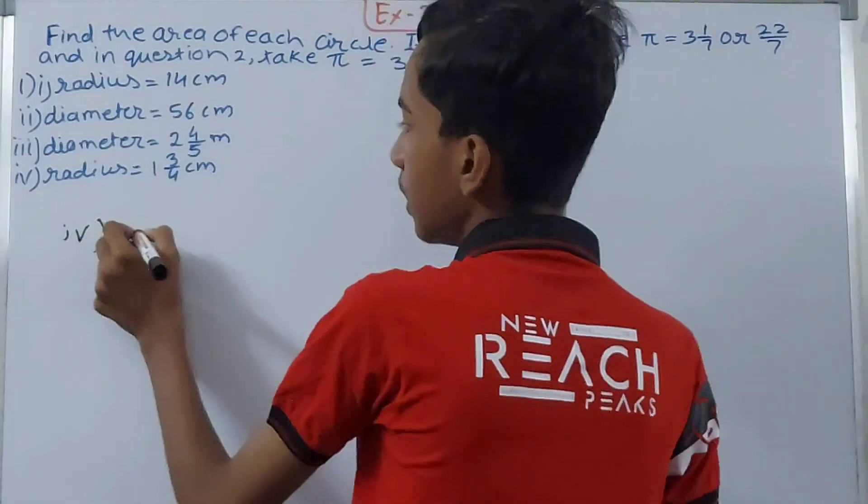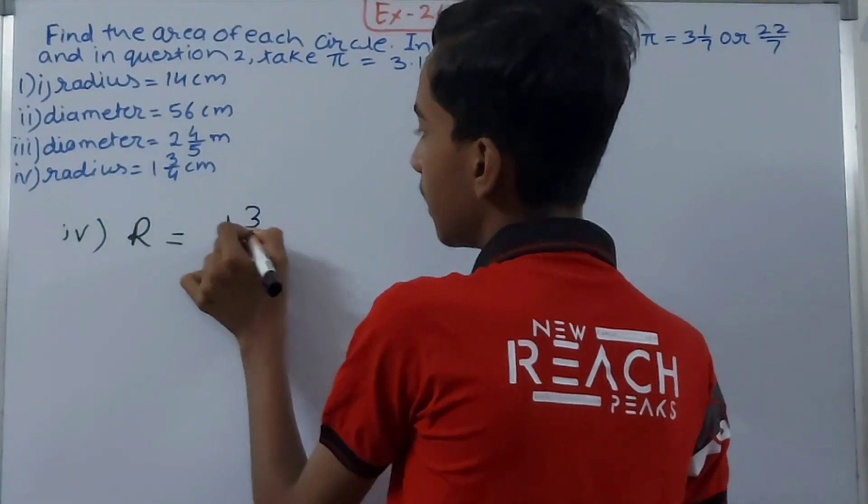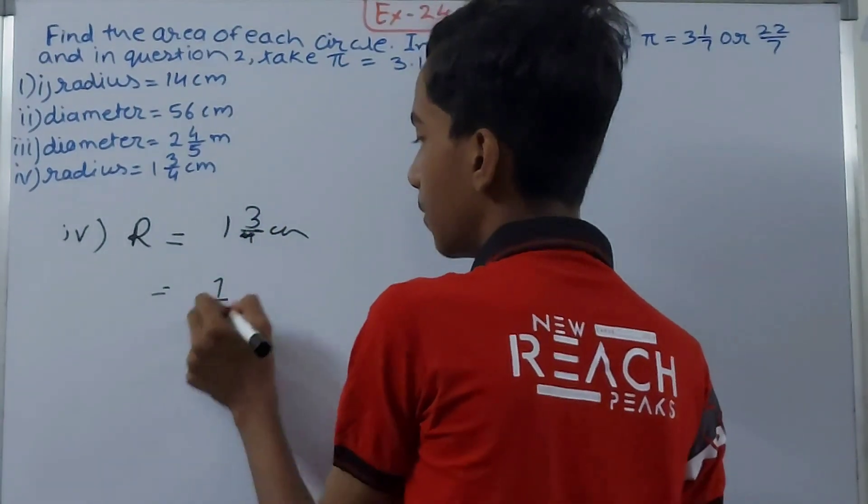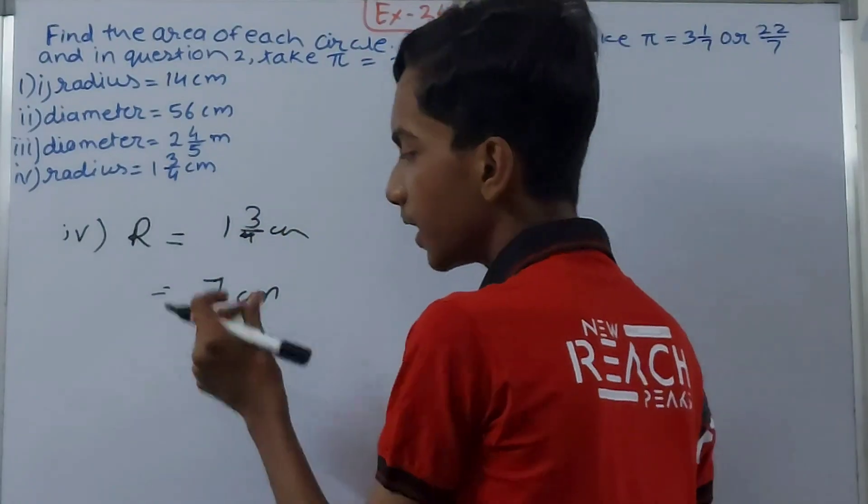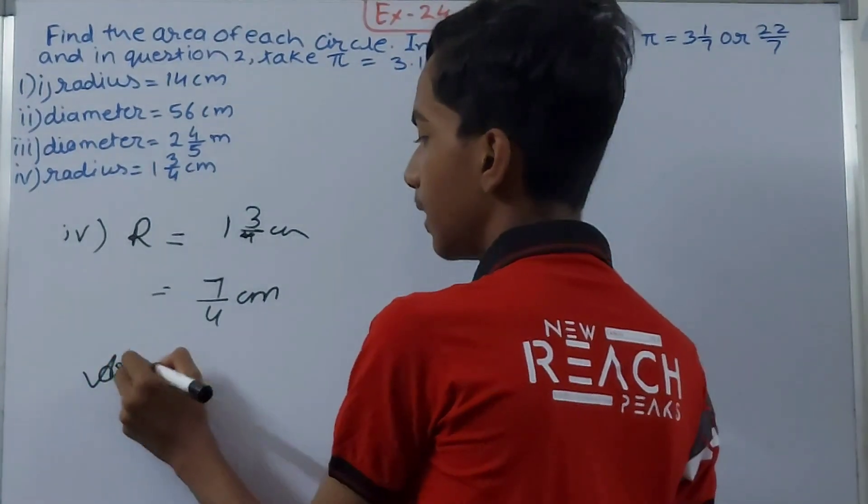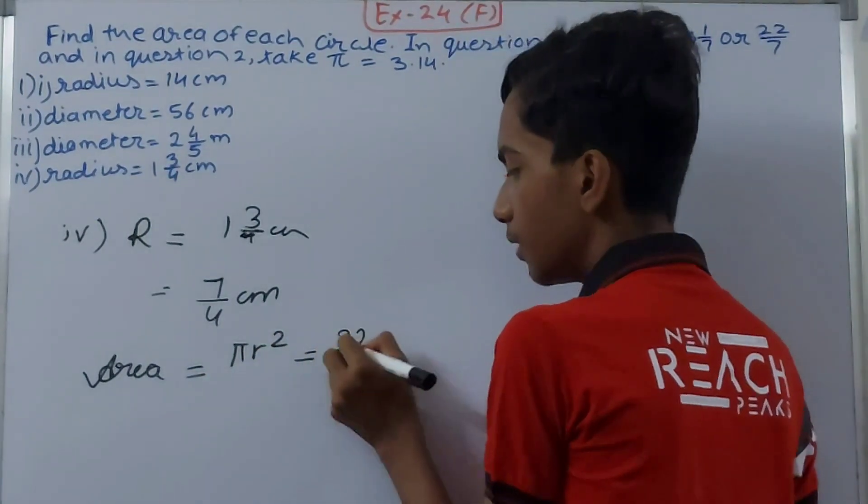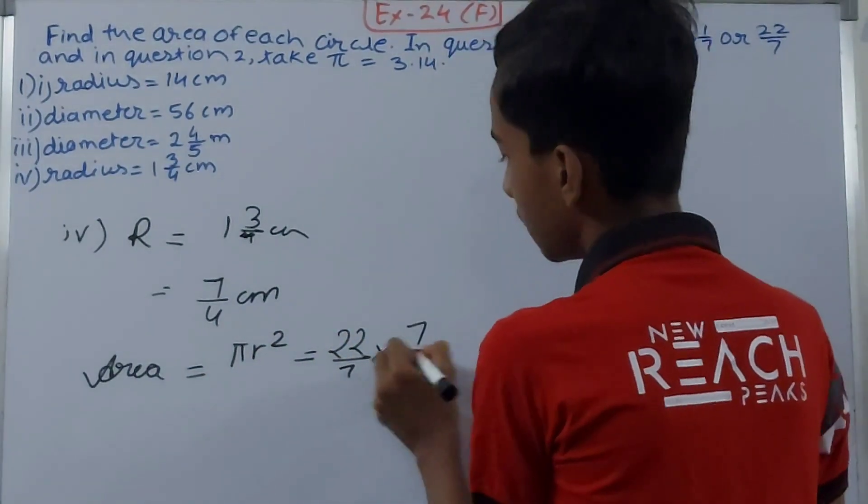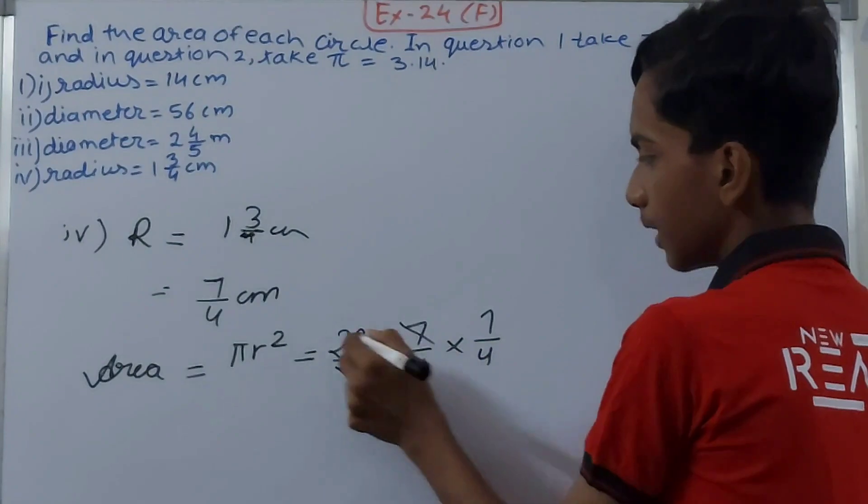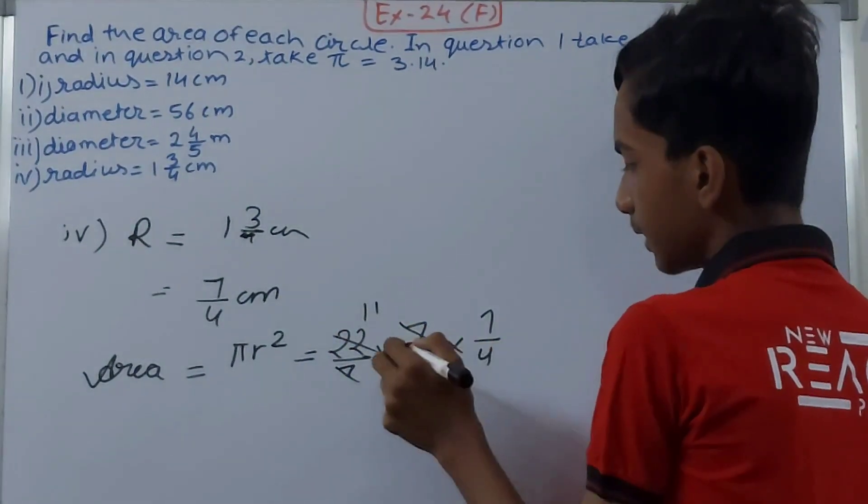Now let's move on to the next part, the fourth one. Here the radius is given to us, that is 1 whole 3/4 cm, which will be 7/4 cm. Convert the mixed fraction to the improper fraction. This becomes the radius. Now area, let's calculate the area, that will be πr², so 22/7 into 7/4 into 7/4. Cancel that, cancel this to 11.